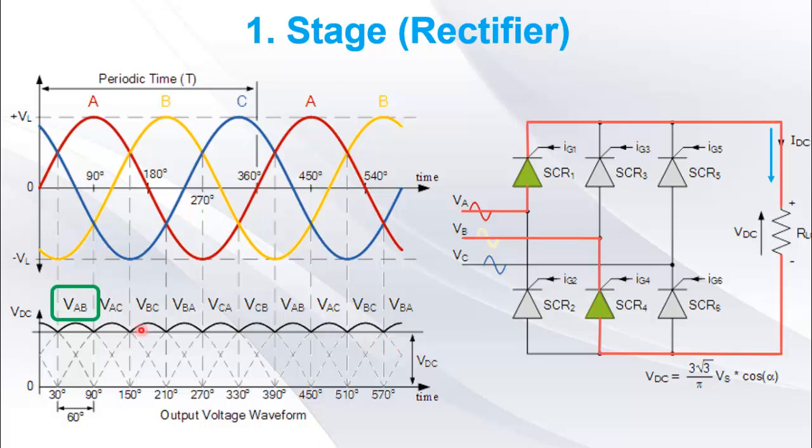Here you can see, for one by six of time period, VEAB polarity is such that SCR 1 and 4 are conducting. The direction of current through the resistor is same in every case. For next one by six of time period, VEAC polarity is such that SCR 1 and 6 are conducting. Similarly, for next one by six of time period, VEAB polarity is such that SCR 3 and 6 are conducting.